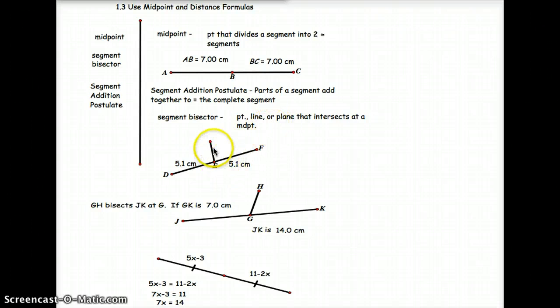This right here is a segment that bisects this, or it meets at the midpoint. So here's our midpoint, E is our midpoint, but now we have a segment that would be a segment bisector, because both of these are 5.1 centimeters.